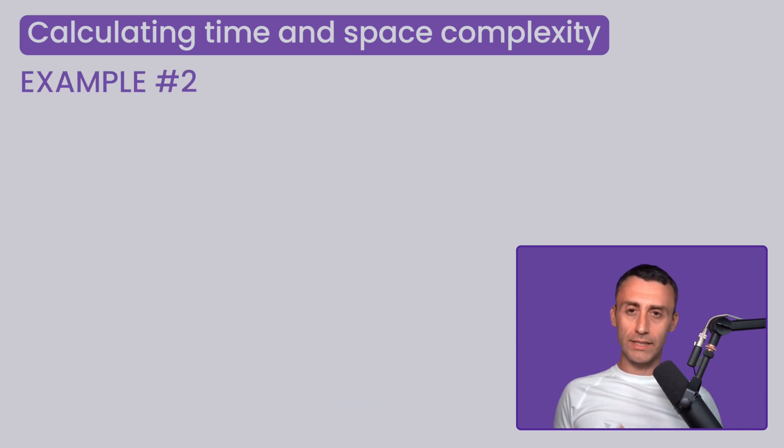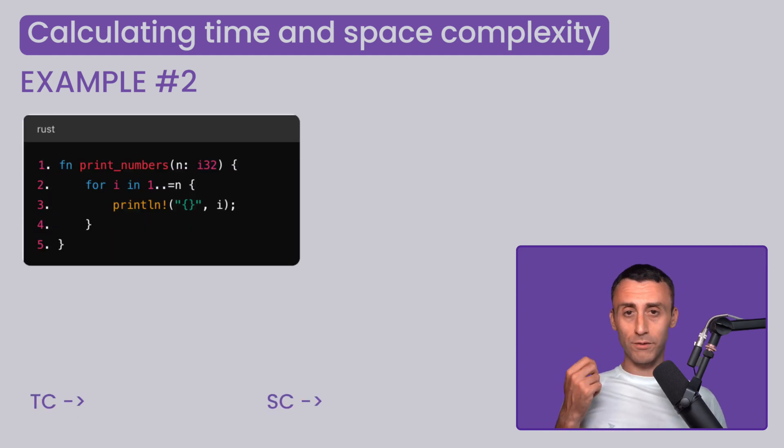Let's now take another example. This time we will see an improved version of the previous example. As you can see on the screen, the method here runs a loop and prints all the numbers starting from 1 to n, with n being the input size. So, let's first calculate the time complexity.